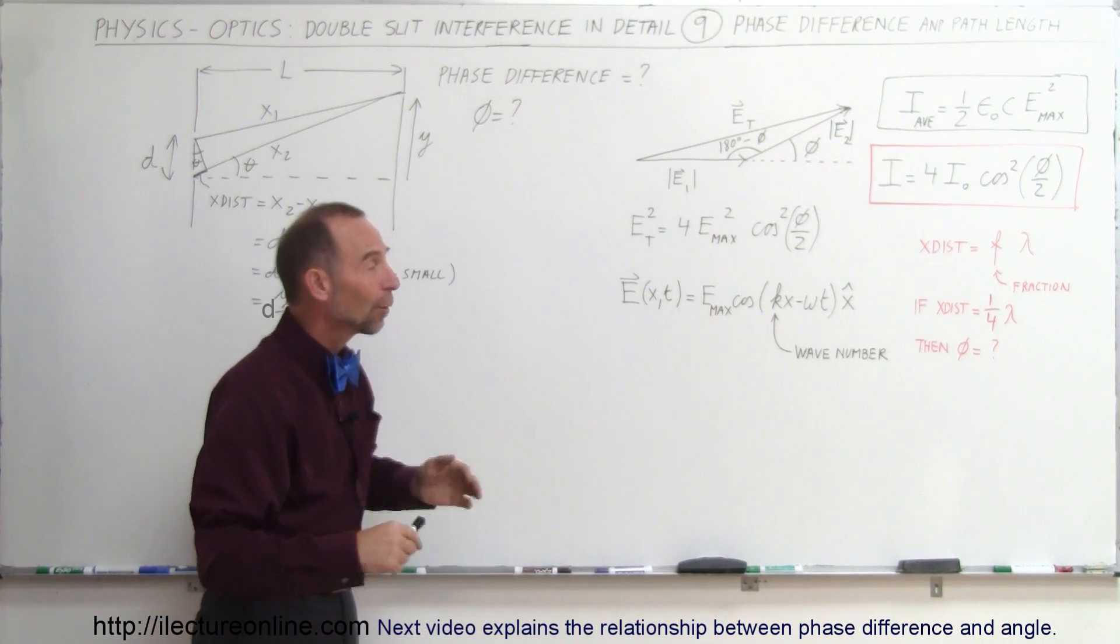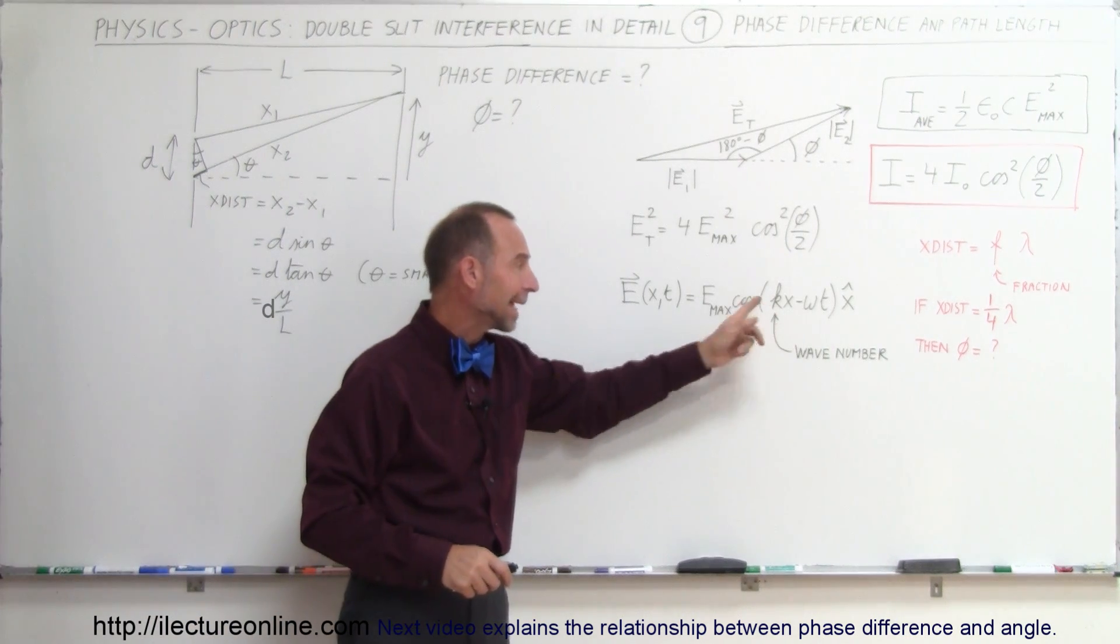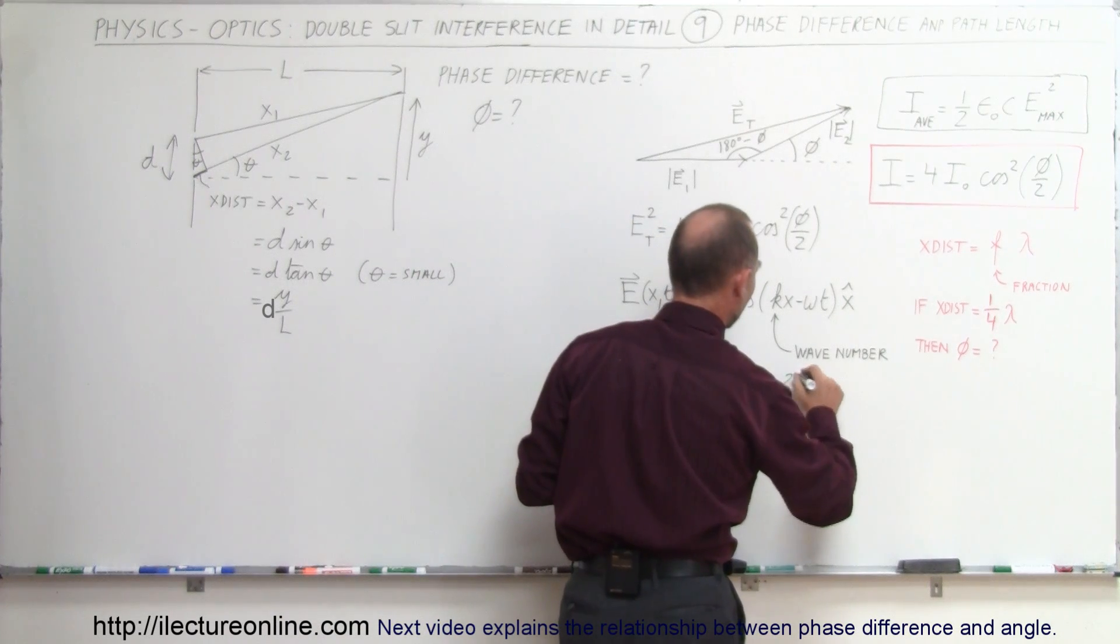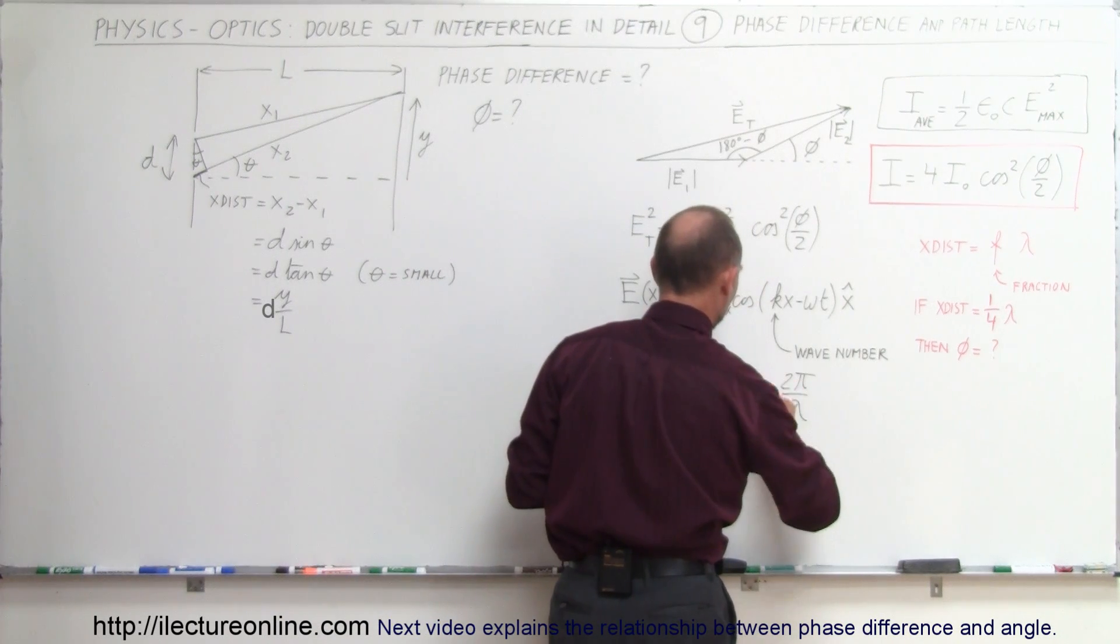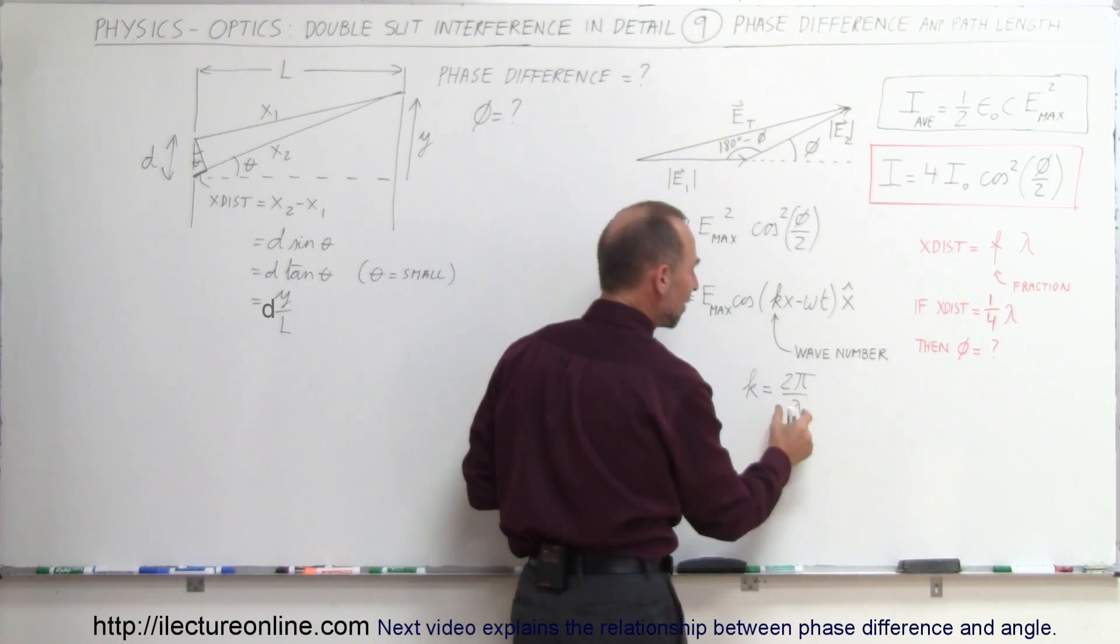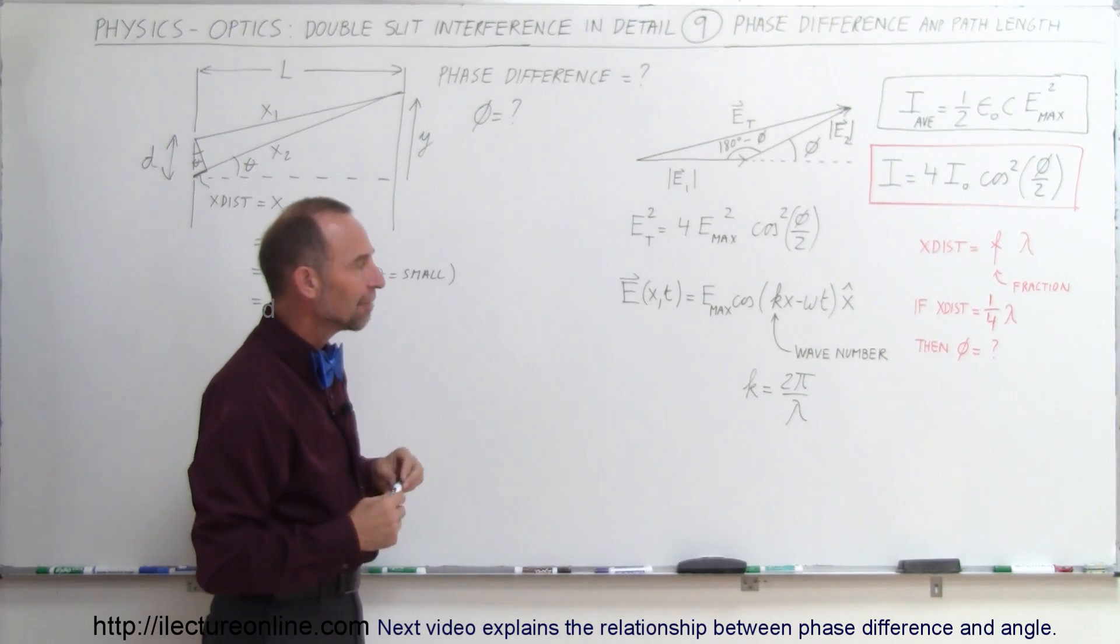The value or the number k is what we call the wave number. It's defined as 2π over lambda. If we multiply that times distance, we get a fraction of a phase. And let me show you where that came from.